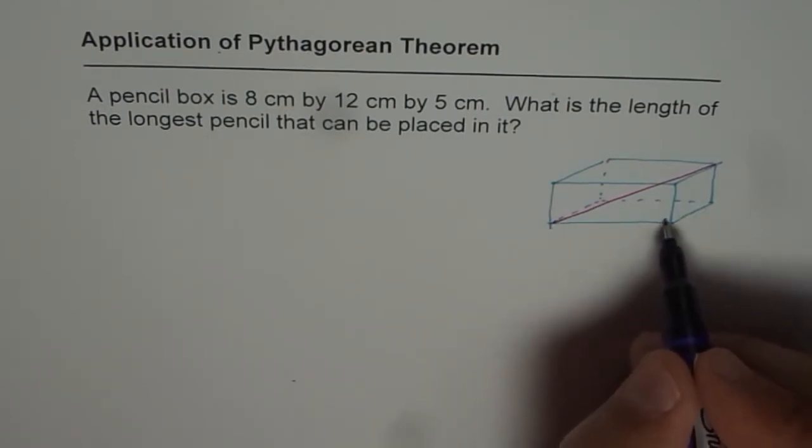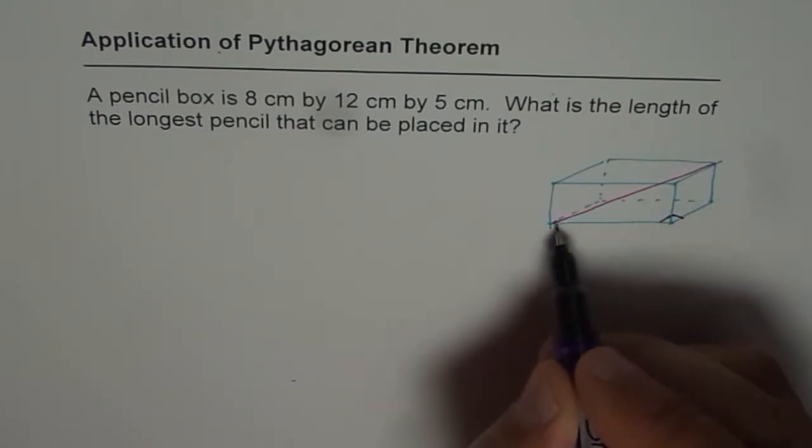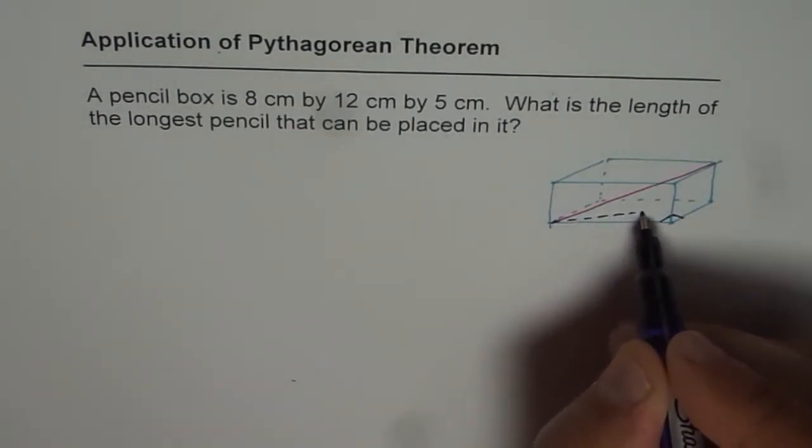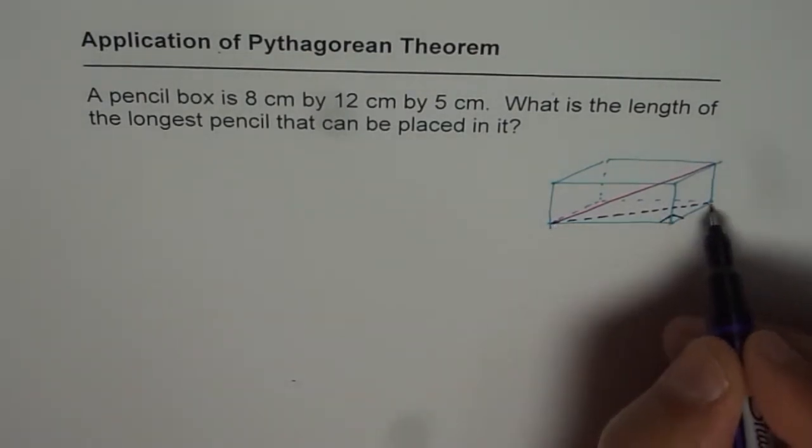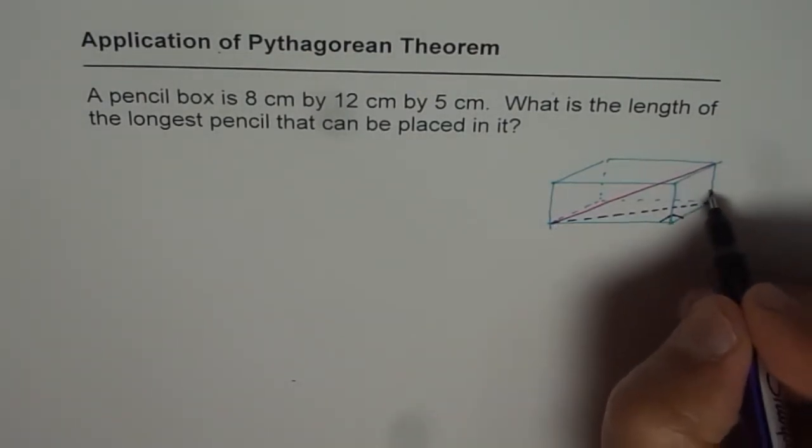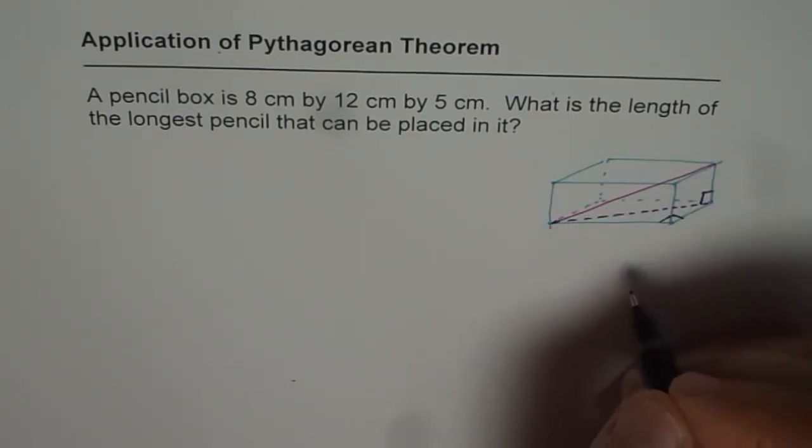The rectangular base, these are at 90 degrees. So let us first find the diagonal of the base. Once we know the diagonal of the base, we will use this right angle triangle and find the longest side.